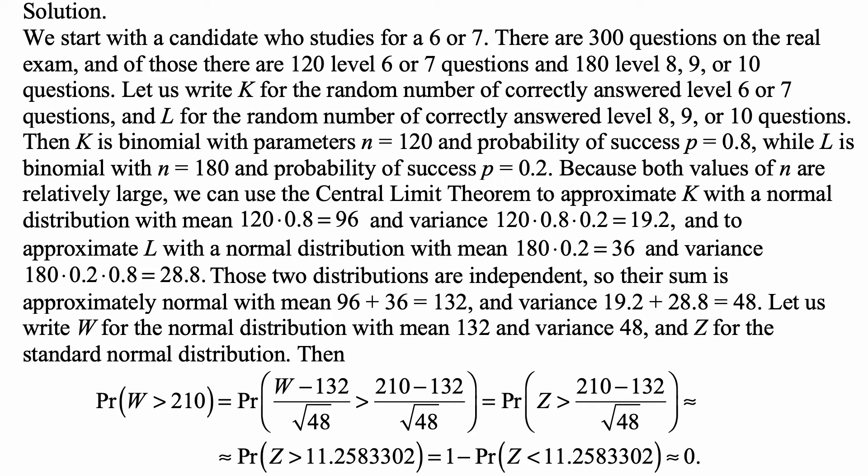Let us write W for the normal distribution with mean 132 and variance 48, and Z for the standard normal distribution. Then the probability of passing is the probability that W is more than 210, and that's equal to the probability of (W - 132)/√48 being greater than (210 - 132)/√48. So it's the probability that Z, because W minus its mean divided by its standard deviation is standard normal, is greater than (210 - 132)/√48, and that's the probability that a standard normal is greater than 11.2583302.